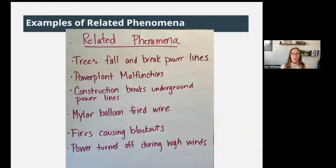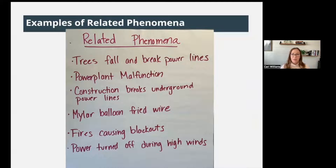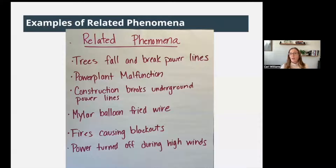When the class shared out, we found some people had a blackout because trees fell and broke the power lines. It could also be a power plant malfunction — something happened at the power plant and they had to shut it down. Construction can break underground power lines while fixing a pipe. A mylar balloon can fry a wire — I've heard of this before where a mylar balloon goes near the wires and causes a big explosion, taking out power in the neighborhood.